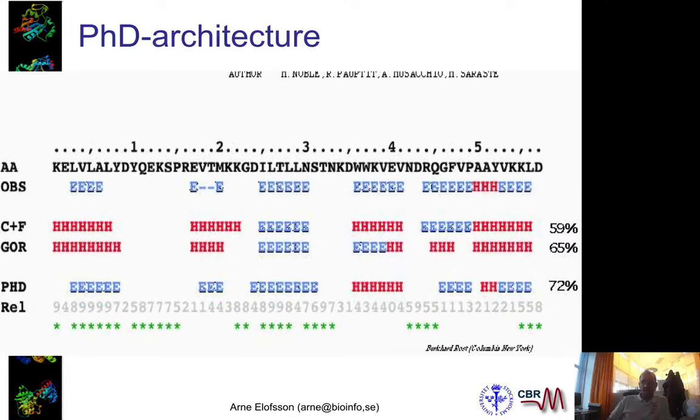You can see here that you have three predictions. PHD is slightly better, but only a few percent better than GOR, but you have no cases where you predict sheets and loops to be wrong or mixed between them.